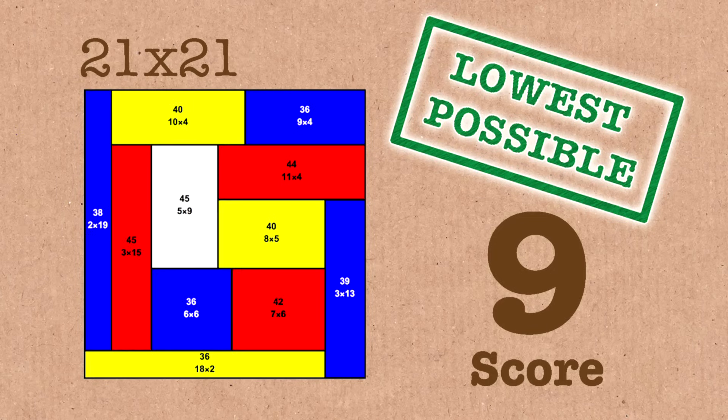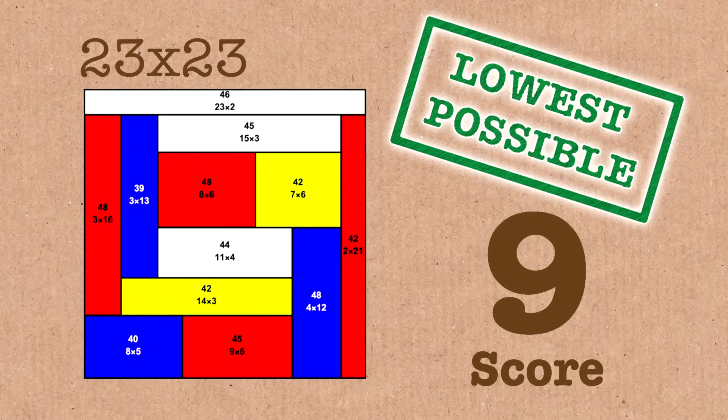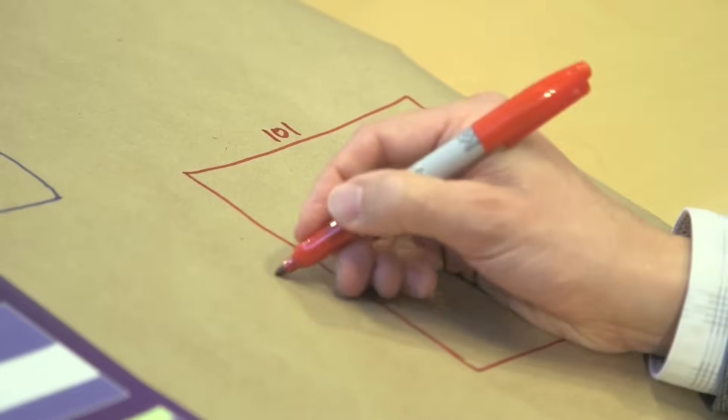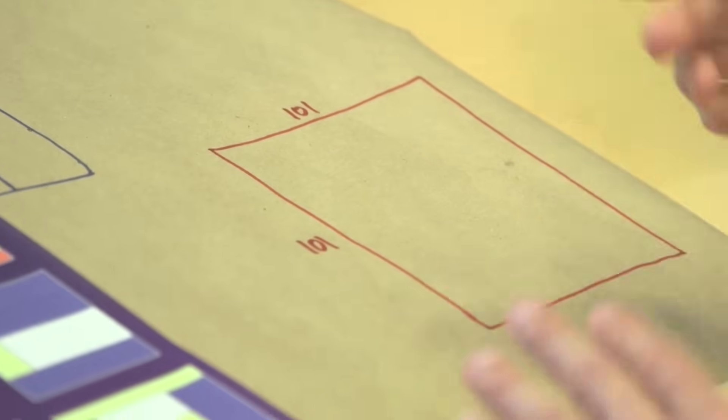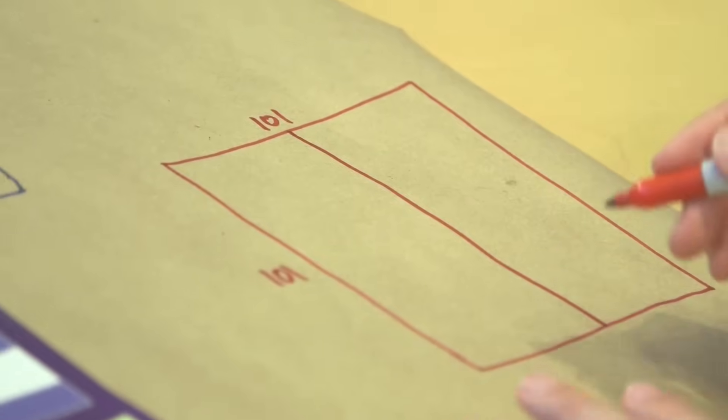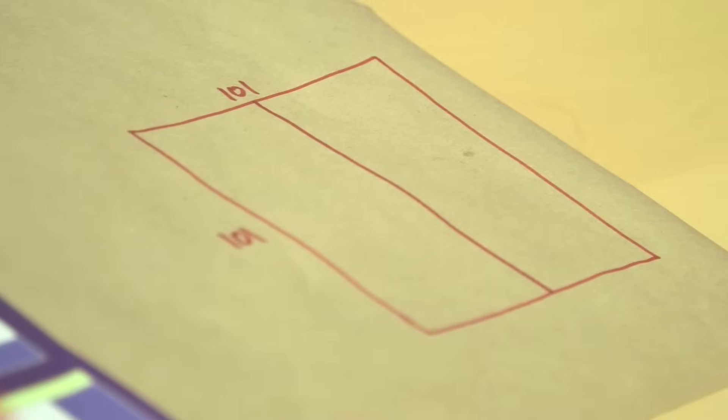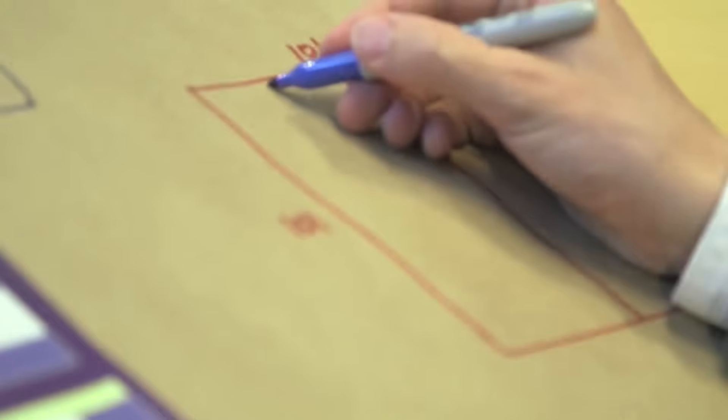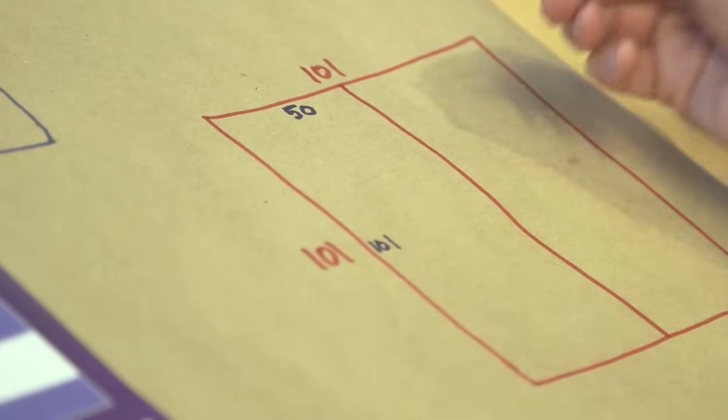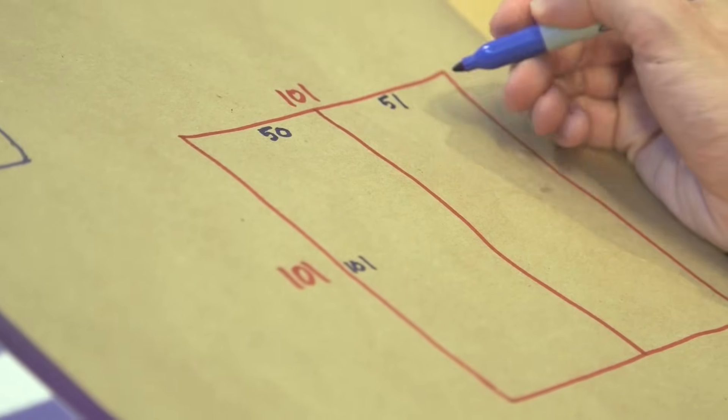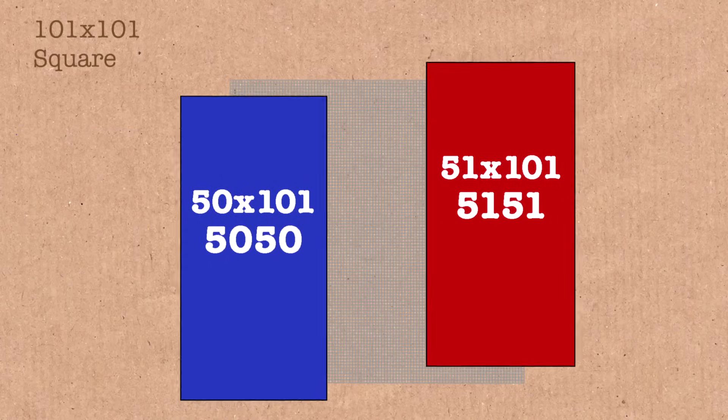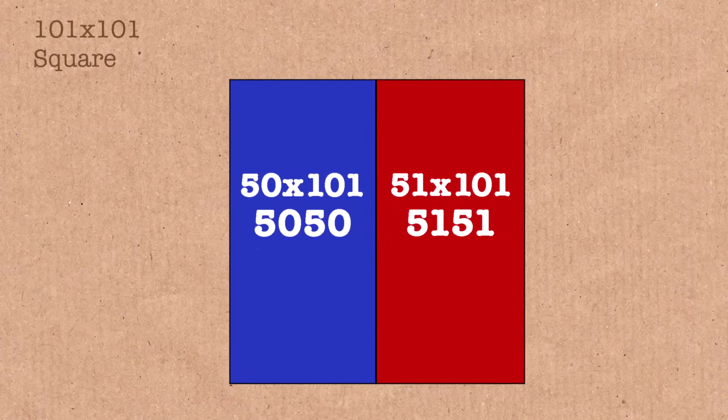So, for example, for an odd square, let's say that you are dealing with a square 101 by 101. Well, at least you know for sure that you can split this nearly in two so that this is a rectangle 50 times 101 and this rectangle is 51 times 101 and you can see right away that your score for any odd square, you can see that it's just the edge length.